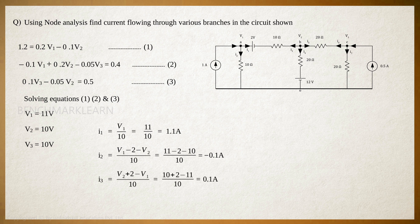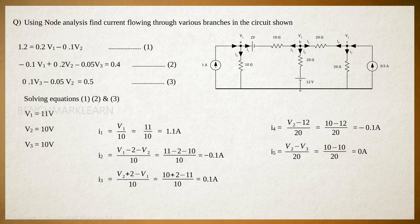I3 is equal to (V2 + 2 − V1)/10, which is equal to (10 + 2 − 11)/10, which is equal to 0.1 ampere. I4 is equal to (V2 − 12)/20, which is equal to (10 − 12)/20, which is equal to −0.1 ampere. I5 is equal to (V2 − V3)/20, which is equal to (10 − 10)/20, which is equal to 0 amperes.